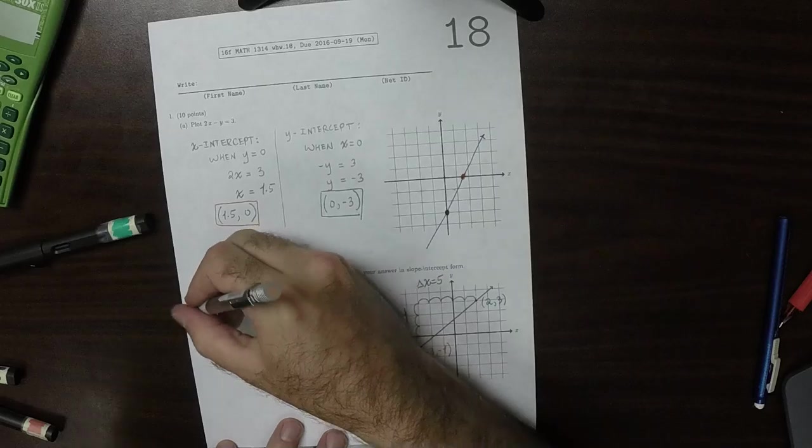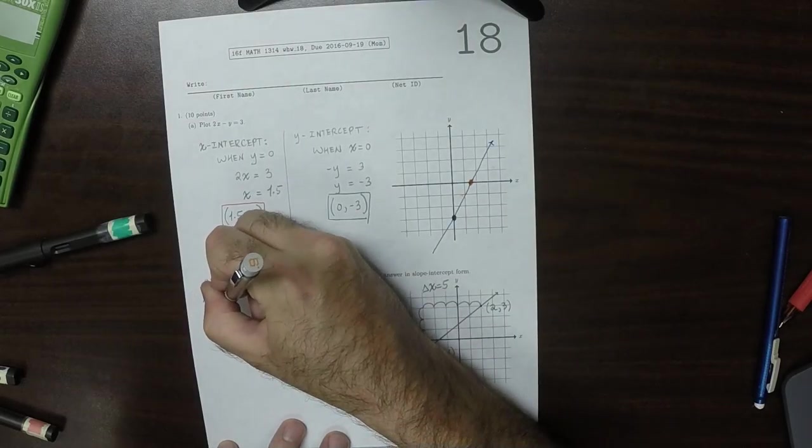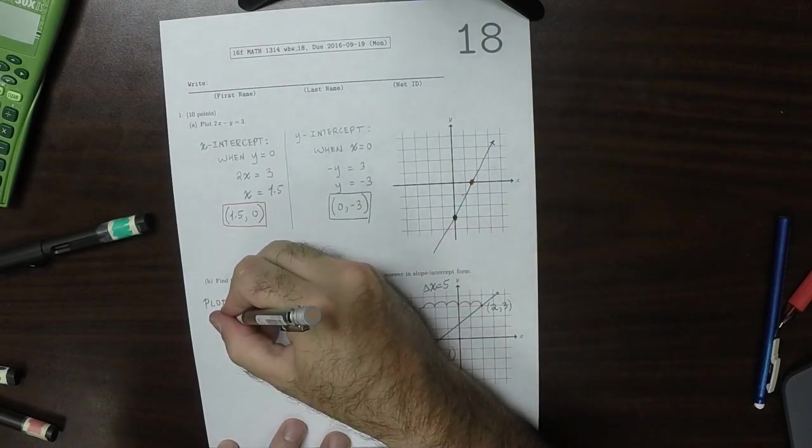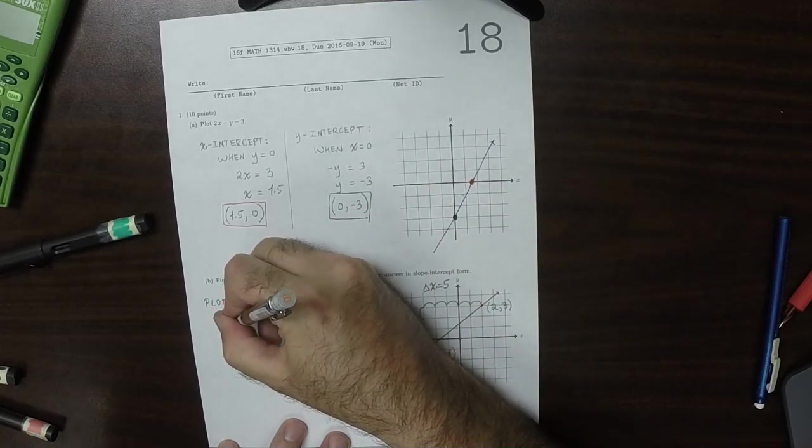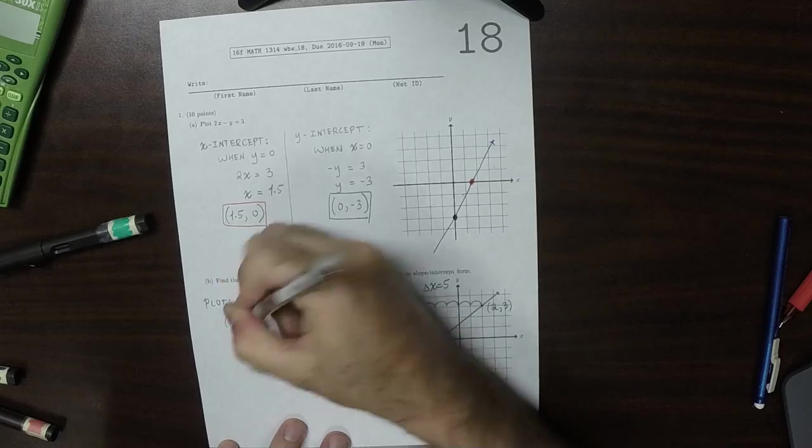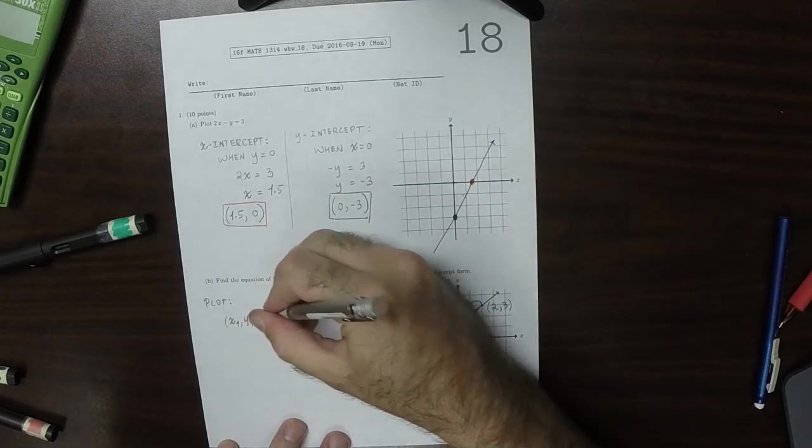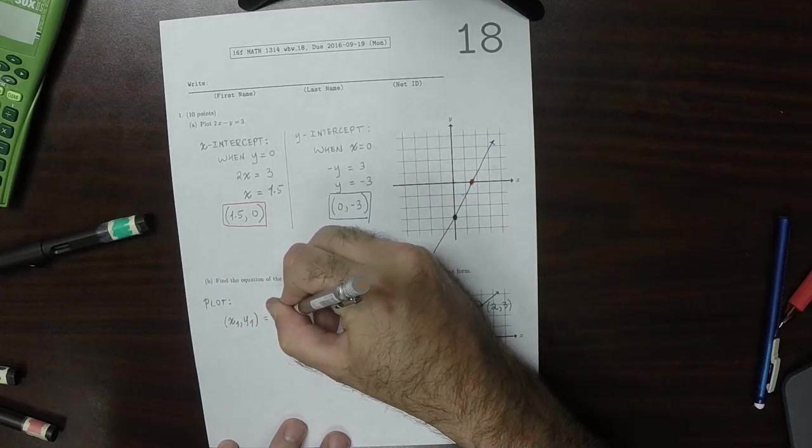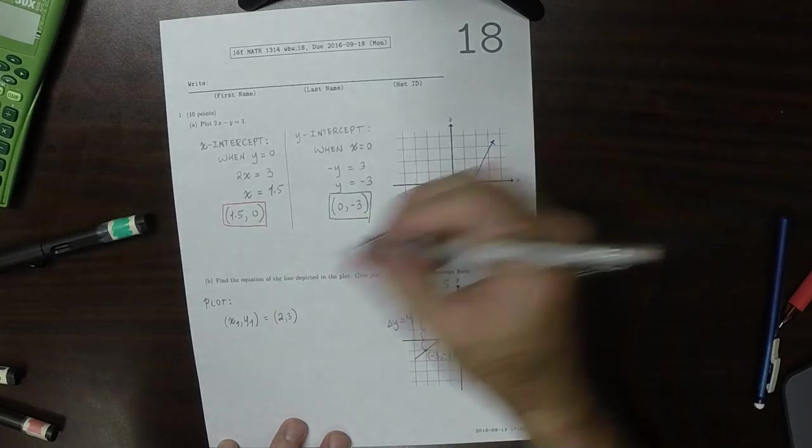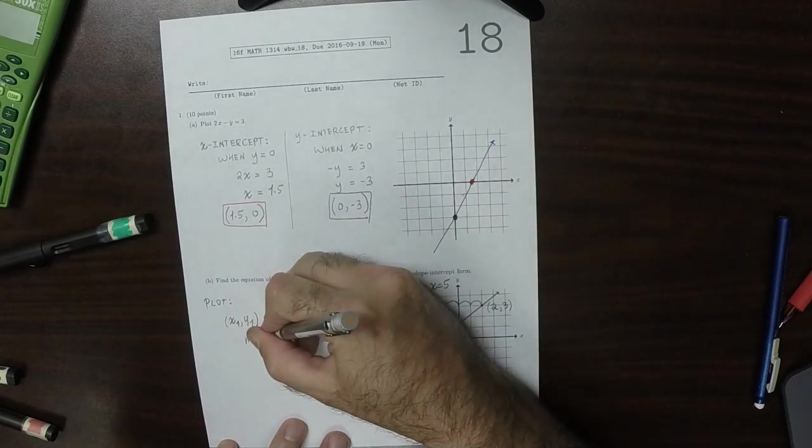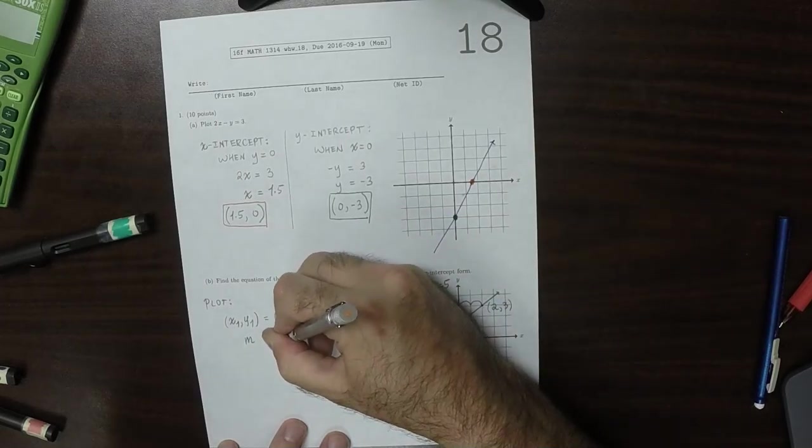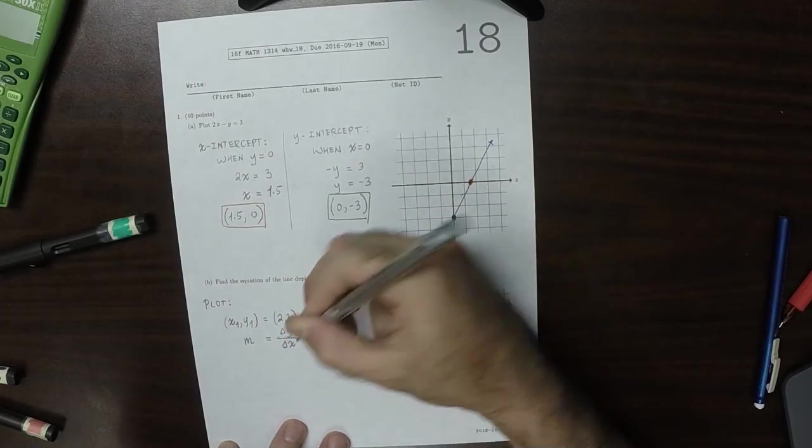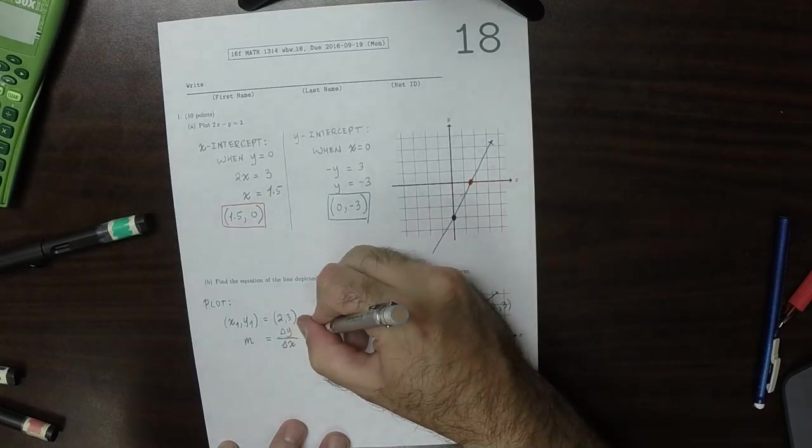And looking at that, so from the plot, we can see that a point which is on the plot is x1, y1 is 2, 3. And the slope, well, that would be rise over run. So that would be delta y over delta x. That would be 4 over 5.